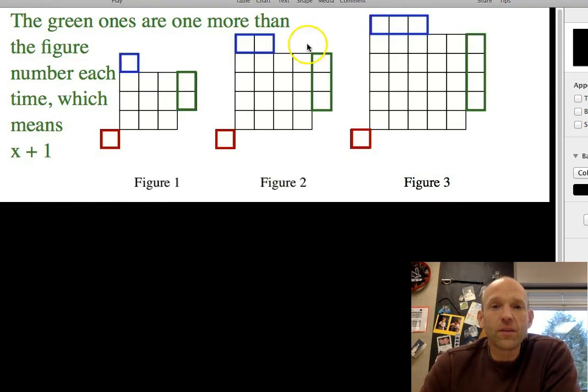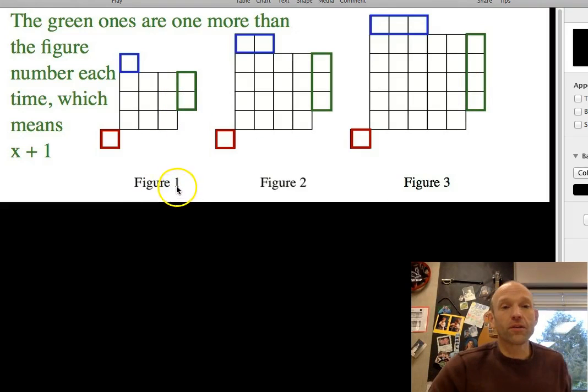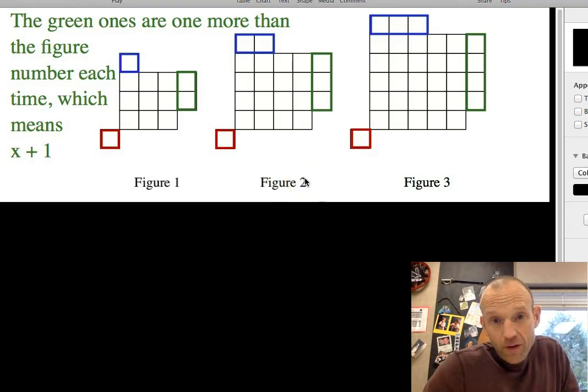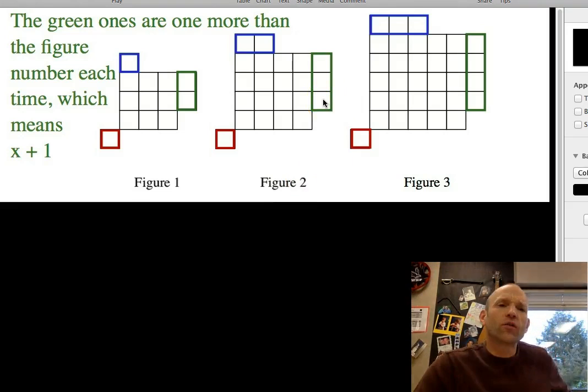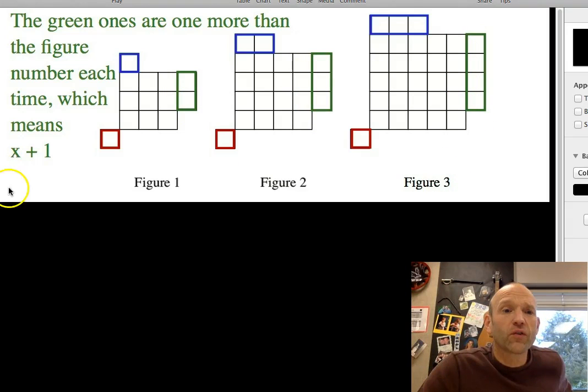Next, I saw this green piece hanging out over here. And what I notice there is it is also growing by one, but in the way it relates to the figure number or the x value, I've got figure one, but then I've got two squares here. I've got figure two has three squares. So what I notice is the green rectangle highlighted section here is the figure number plus one. Figure number is x, so we're going to call the green section x plus one.